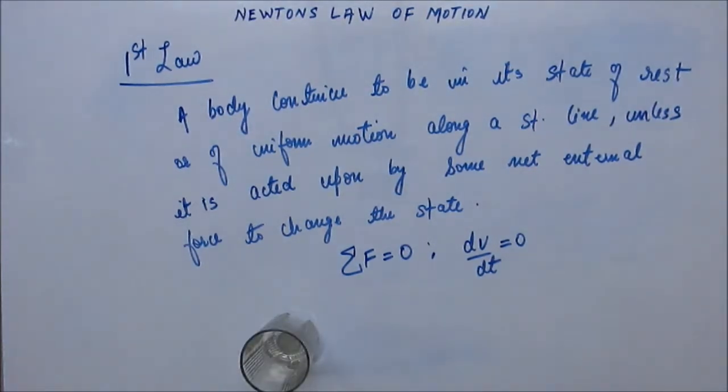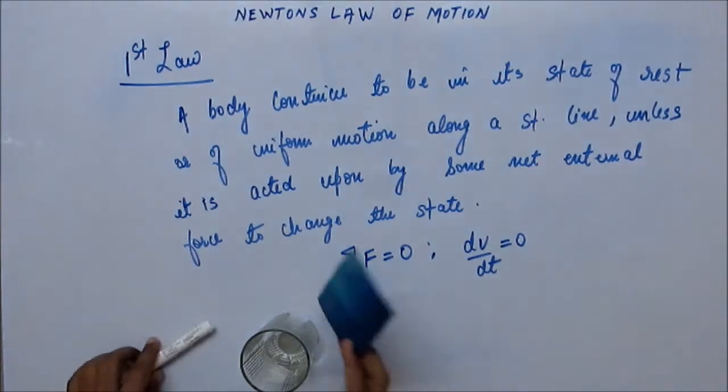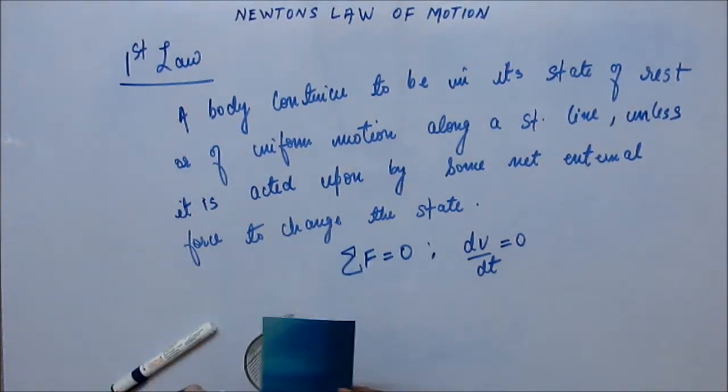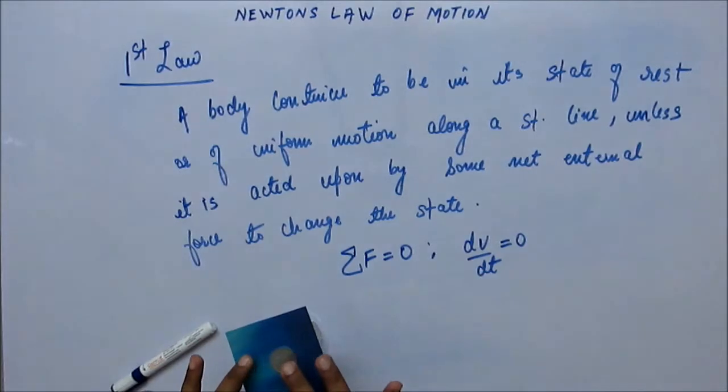But when we do it fast, then the coin doesn't match up with the speed of the paper and it falls. Because it was in the state of rest and it continues to be in the state of rest. But when the paper is no more there, then it falls under the force of gravity.